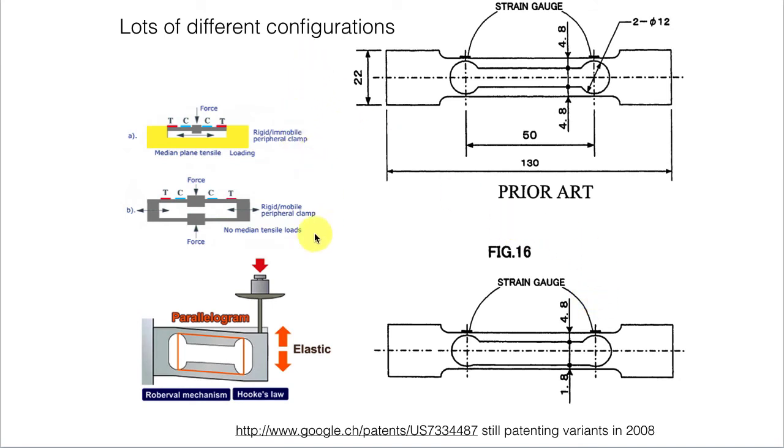Lots of different configurations you can build load cells into that provide different advantages and disadvantages. The main advantage of the shear beam load cell like this one is that if you put a weight on out here, you wind up with this kind of distortion happening here, and the stretch in these ones is insensitive then to the moment that you put on it.